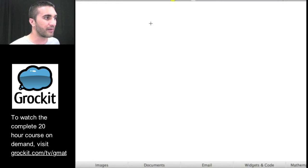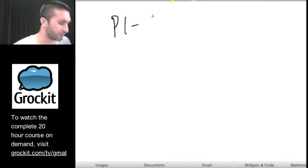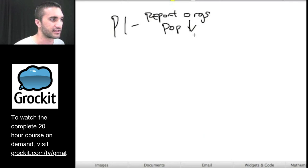So on my GMAT, I'm sort of keeping track of this like this. I'm writing a little P1 for paragraph one and I'm noticing that it says report on orangutans. Report on orangutans says that their population is declining. And that's all I need. I just need to summarize it really quickly.